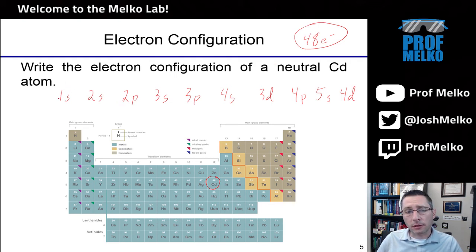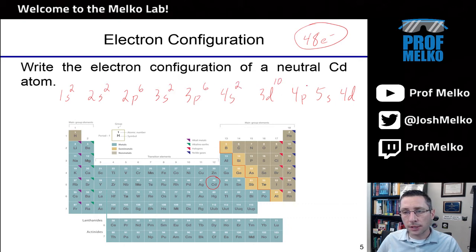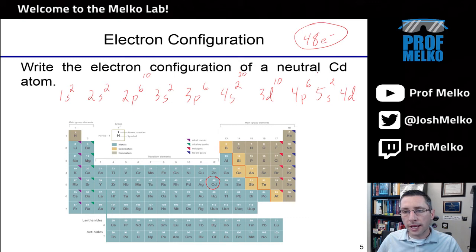Starting with the lowest sublevel, 1S holds 2 electrons. 2S is an S sublevel, so 2 fit. P sublevel holds 6. Then S: 2, P: 6, S: 2, D: 10, P: 6, 5S: 2. Counting up: 2+2=4, plus 6 is 10, plus another 10 is 20, plus 10 is 30, plus 6 is 36, plus 2 is 38. So at this point I'm at 38 electrons, which means I have 10 electrons left — and all 10 fit in the 4D sublevel.